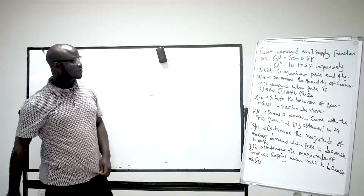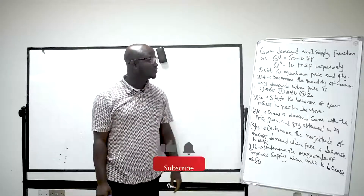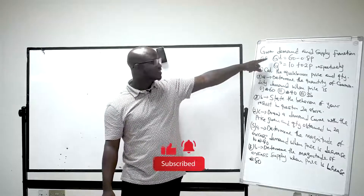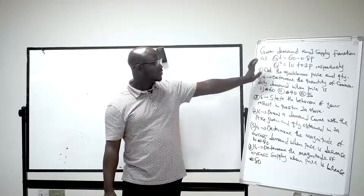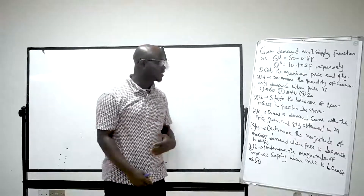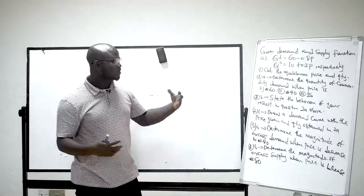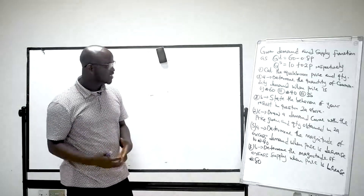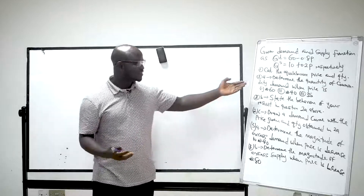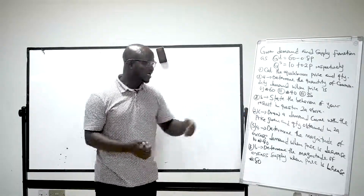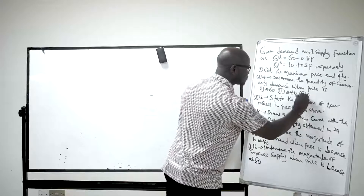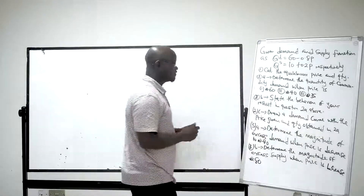Look at the first question here. Given the demand and supply functions: QD represents the demand function and QS represents the supply function. We have been asked to calculate the equilibrium price and quantity, and to determine the quantity of the commodity demanded when the price is 60 Naira, 40 Naira, and 35 Naira.